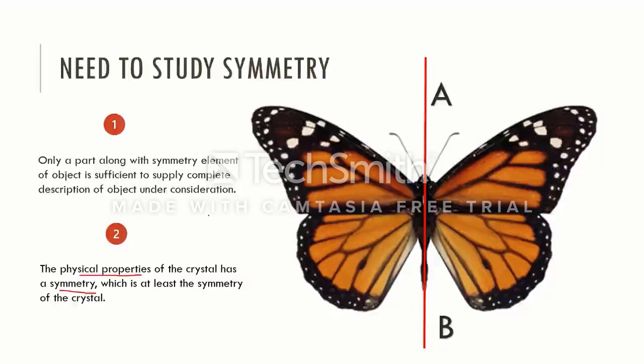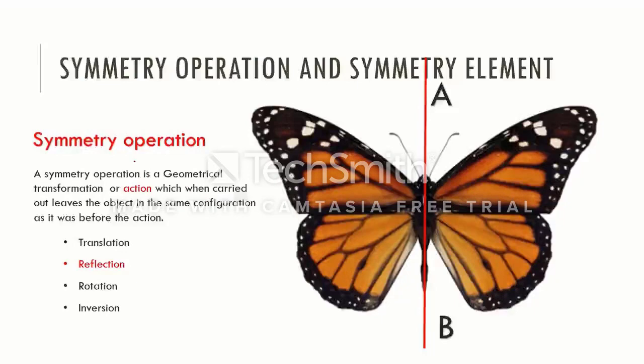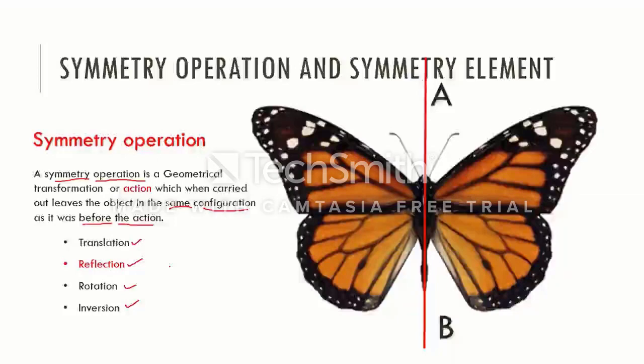Before we consider different types of symmetry operations, the difference between the two terms symmetry operation and symmetry element must be realized. A symmetry operation is a physical or imaginative action which, when carried out, leaves the object in the same appearance as it was before the action. The action could be translation of a repeated unit to produce infinite regular arrangement. It may also be reflection, rotation, or inversion. All these actions, if they leave the configuration unchanged, are symmetry operators.